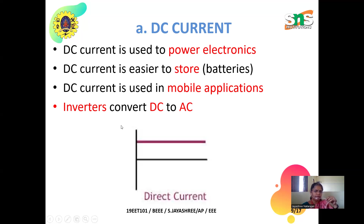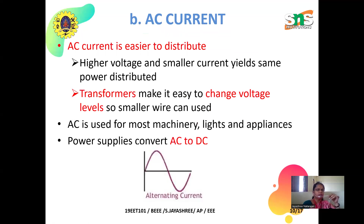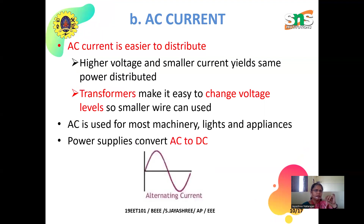AC current is easier to distribute. The power generated in power stations needs to be transferred to consumers, and AC is convenient to transport. We can increase the voltage using transformers and also decrease the voltage using transformers. If we increase the voltage, the current is reduced and transmission losses are minimized. So AC is easier to distribute and is used for most machinery and light appliances. Power supplies convert AC into DC — there are switched-mode power supplies in all supply units that convert AC into DC.